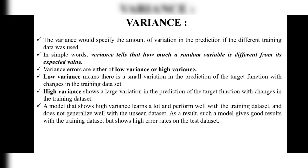Hello everyone. Till now we have completed Unit 2's first topic, that is bias. In this video, we have the next topic that is variance. Variance specifies the amount of variation in the prediction if different training data was used. It predicts the variations between the training data sets. In simple words, variance tells how much a random variable is different from its expected value.